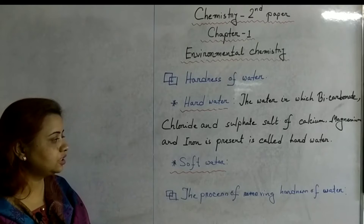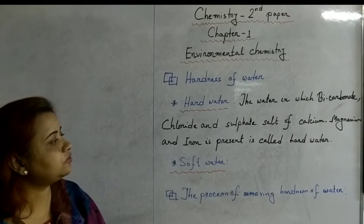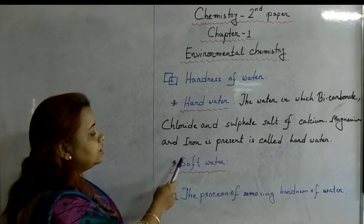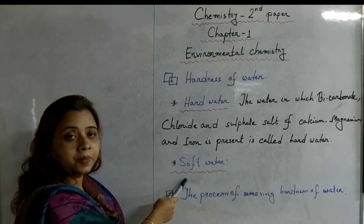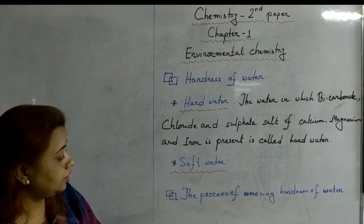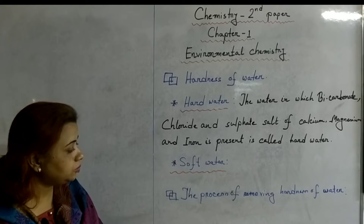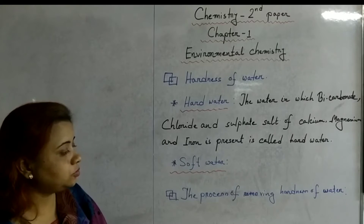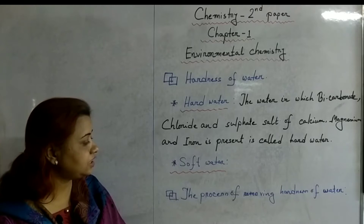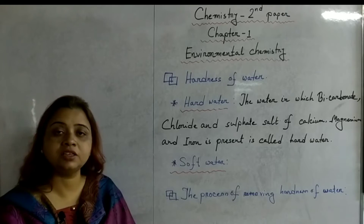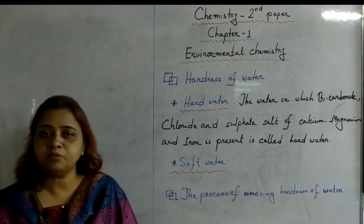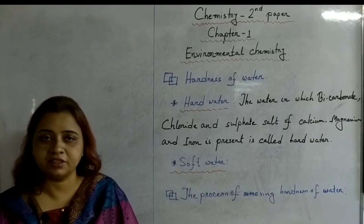Now come to soft water. Water which is free from such types of salts is known as soft water. There are two types of hardness of water: temporary hardness and permanent hardness.